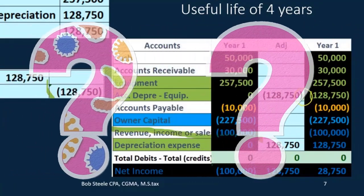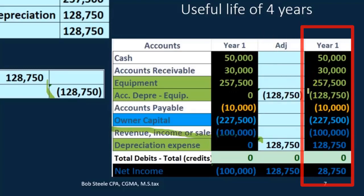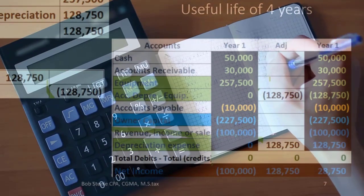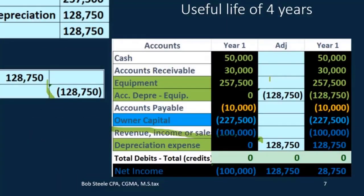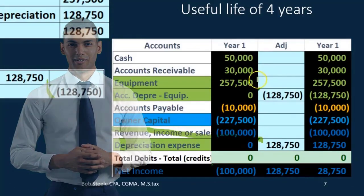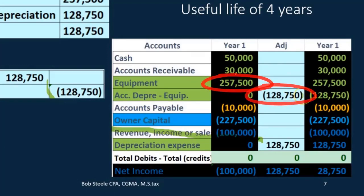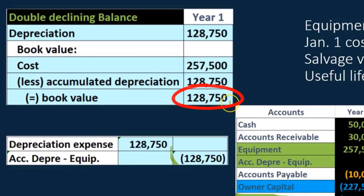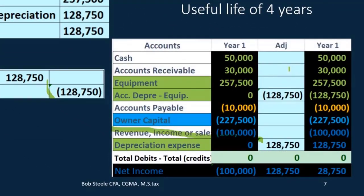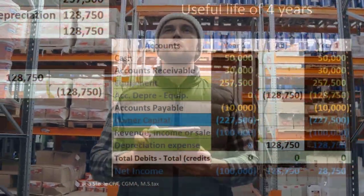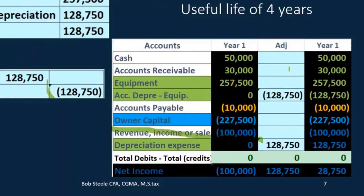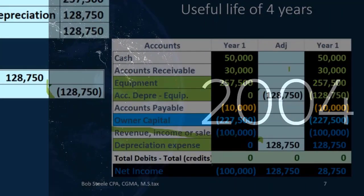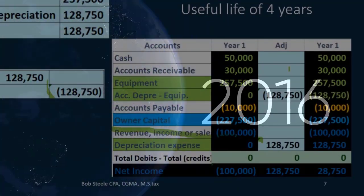The credit posts to accumulated depreciation, bringing it from zero up to $128,750. Accumulated depreciation is a contra asset — it has a credit balance because instead of writing down the equipment account directly, we split it into two parts: the original cost and the estimated depreciation to date. This lets us show the reader both what we paid and how much has been depreciated, leaving book value as the debit cost less the credit accumulated depreciation: $128,750.